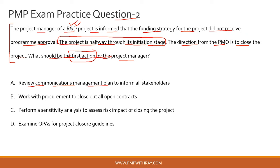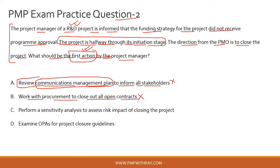Option A: review the communications management plan to inform all stakeholders. This is incorrect. You can communicate during project closure, but is it the first action? Probably not. Also, the communications management plan is not even available at the initiation stage — it's developed in planning. Option B: work with procurement to close out all open contracts. This is outright incorrect because at the initiation stage there are no open contracts — procurement has not been executed yet.